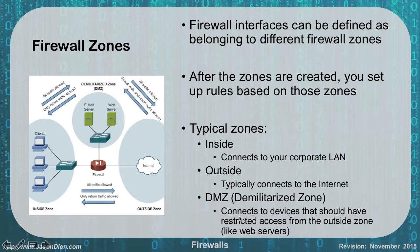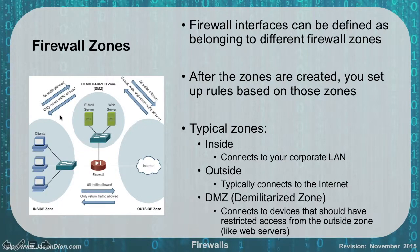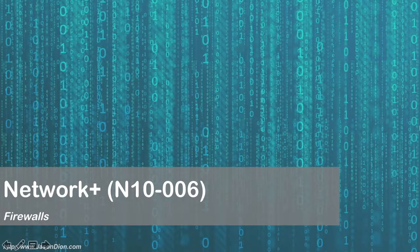As shown in the diagram, traffic from the internet can go to the DMZ and return from it. Traffic from inside the network can go out to the internet and receive return traffic only, based on the stateful firewall rules. Internal clients can also access the servers in the DMZ, with all traffic governed by the firewall rules set up for each zone. That covers the basics of firewalls.